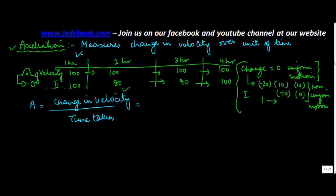So let's say if you were to compare it from between first and third hour, what is the change in velocity? It is 90 minus 100 or minus 10, and the time taken is two hours, so minus 5 kilometer per hour.